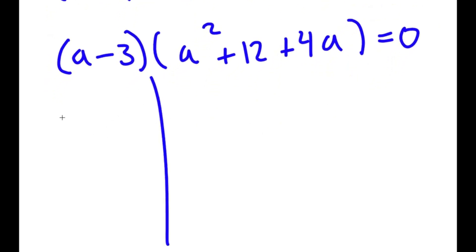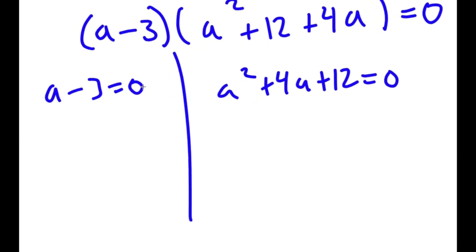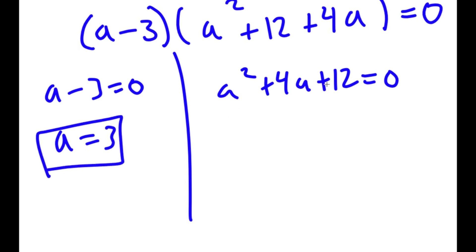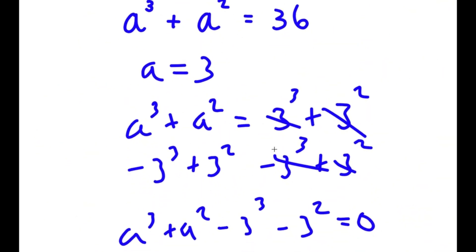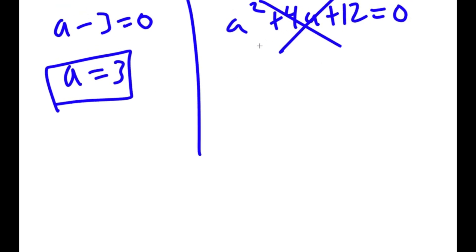This gives me two equations: a minus 3 equals 0, and a squared plus 4a plus 12 equals 0. For a minus 3 equals 0, a obviously equals 3, so that's one solution. For a squared plus 4a plus 12 equals 0, using the quadratic formula gives no real solution because you get the square root of a negative number. So a equals 3 is our only solution.